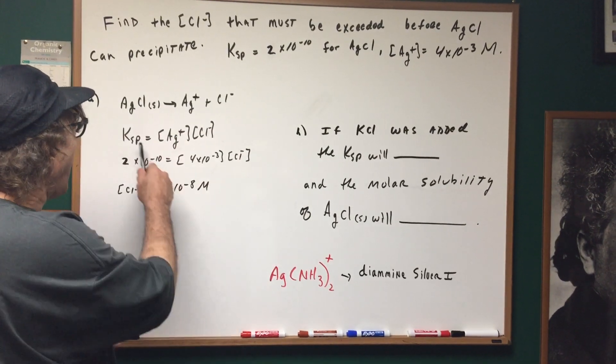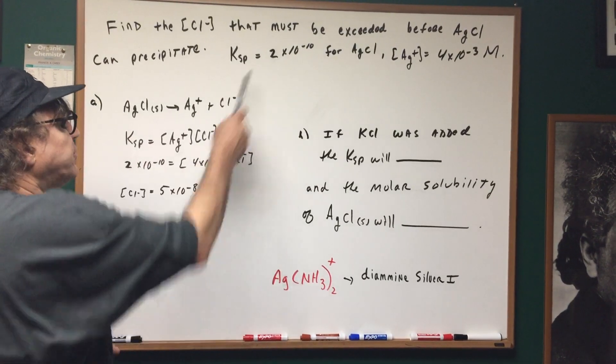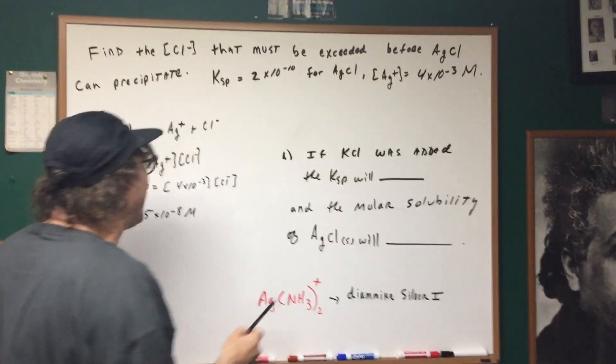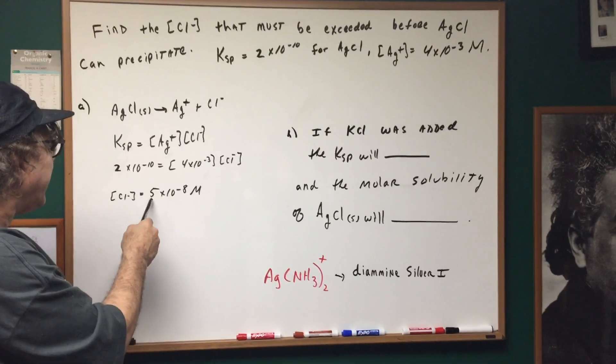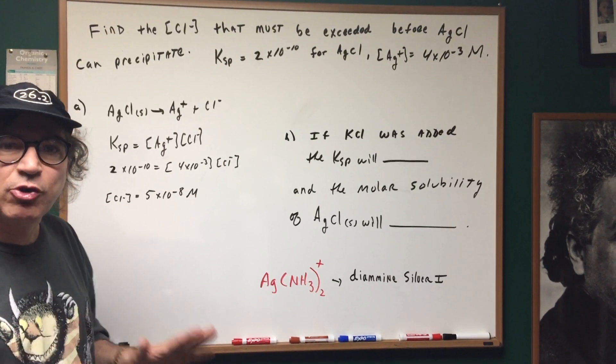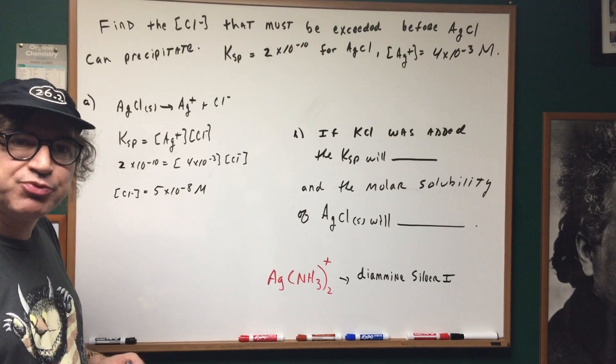Once we wrote the reaction, I wrote the Ksp. Now put the values in. We know the value of the Ksp, we know the value of the silver, and that will give me the chloride ion concentration to form a saturated solution. Anything beyond this value would cause precipitation.